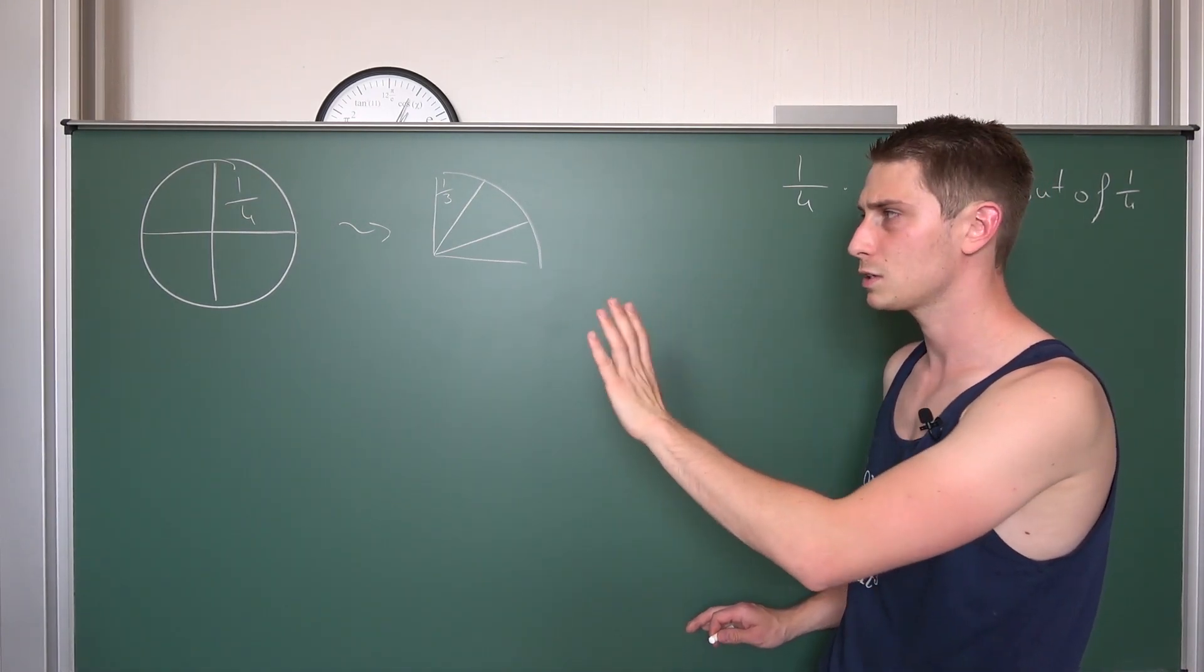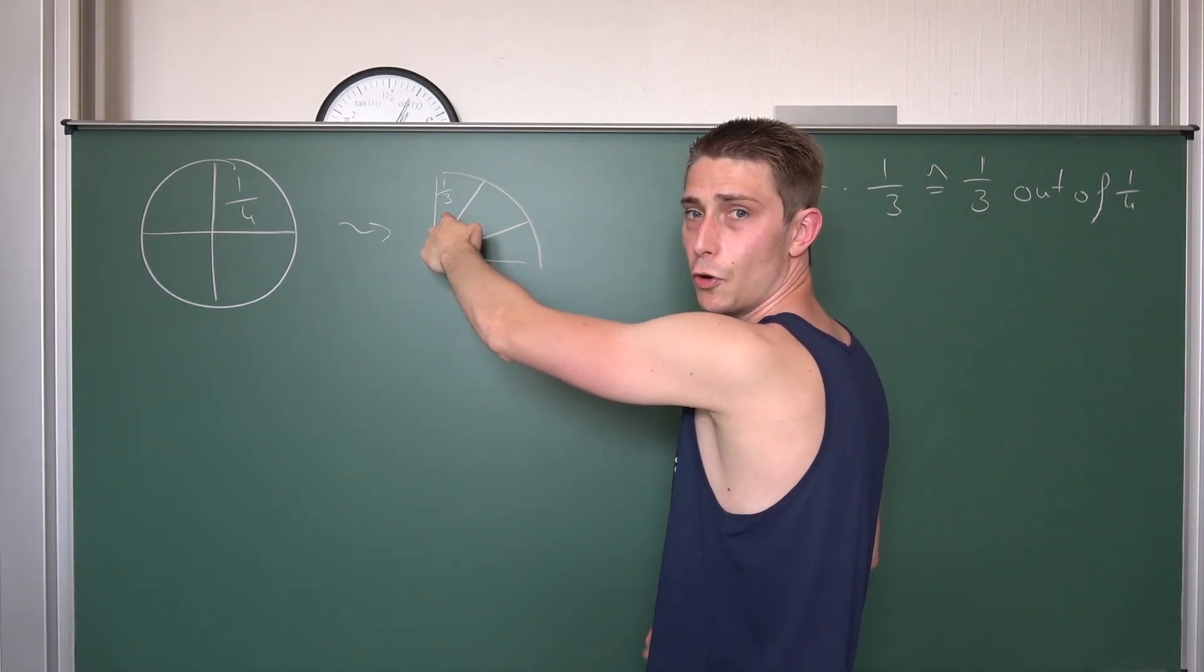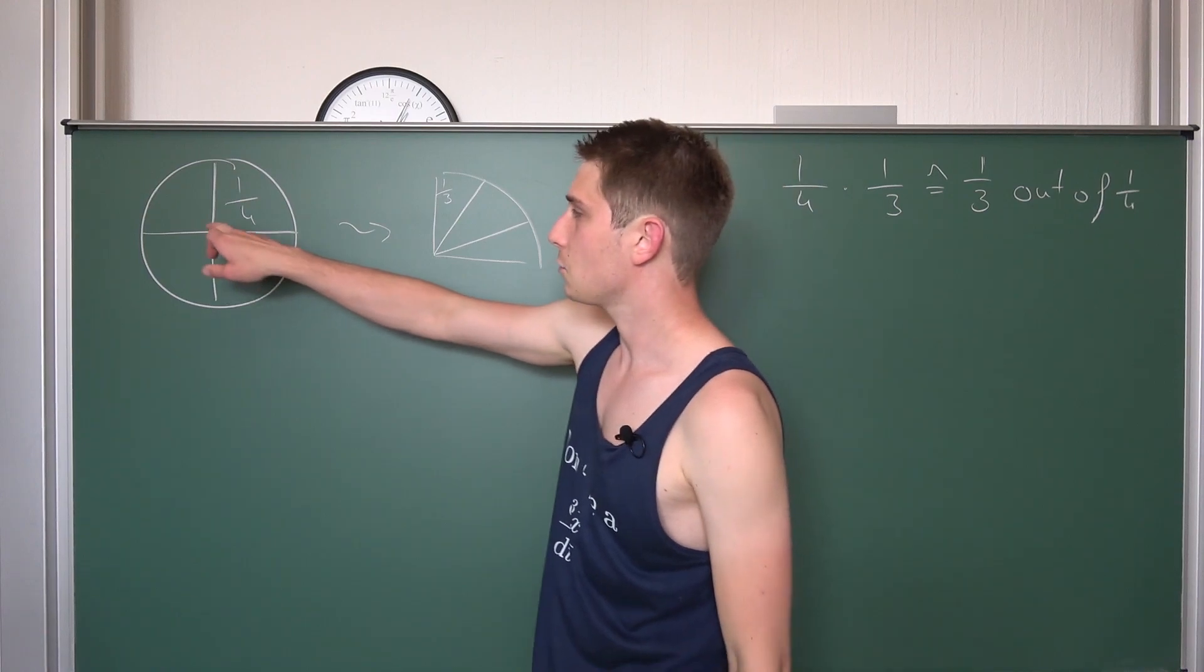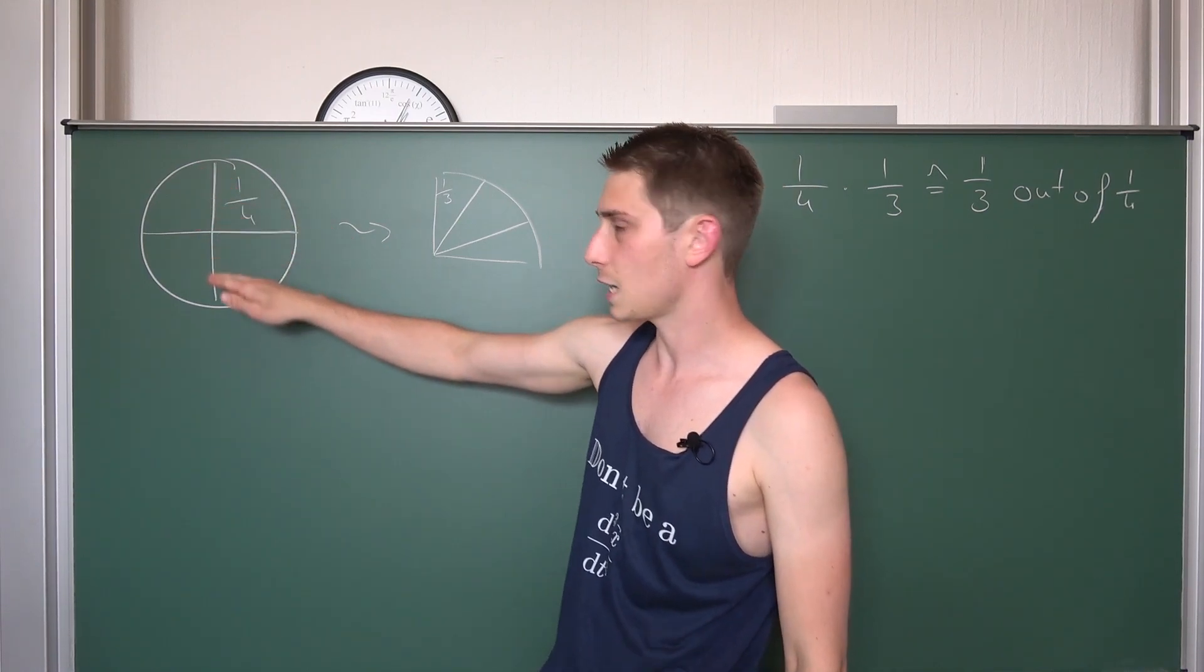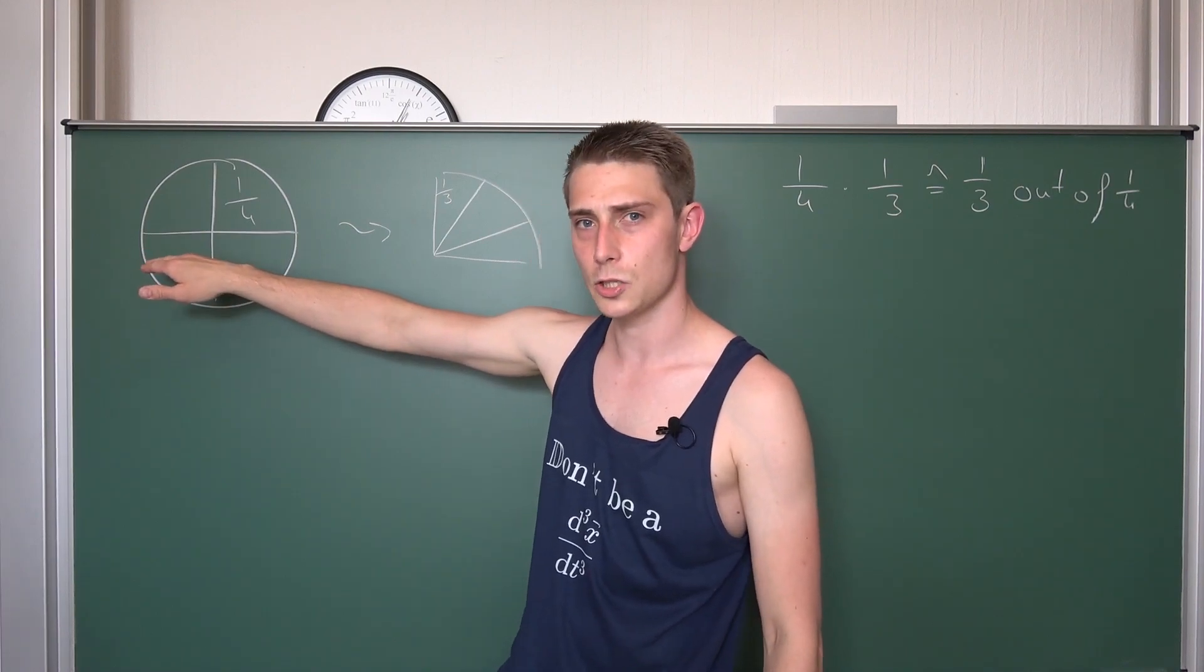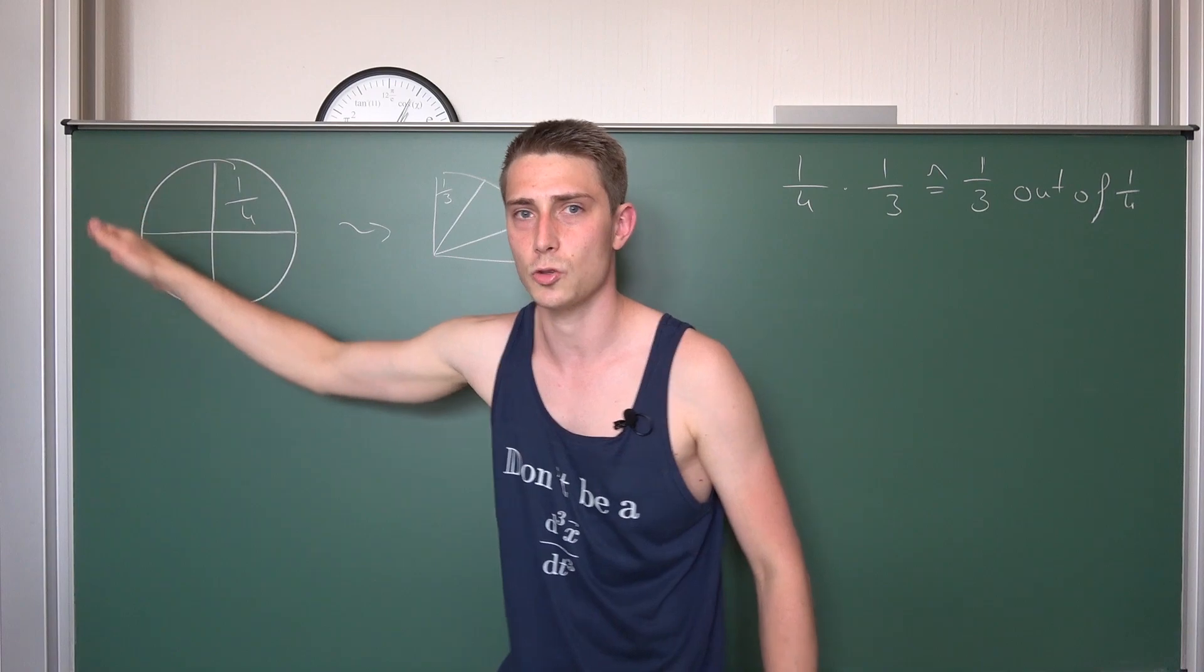Now the only thing you need to do is to count. So, a third fits three times into one quarter. So that means it fits three times into here, six times into one half, then nine times into three quarters, and exactly twelve times into one cake.